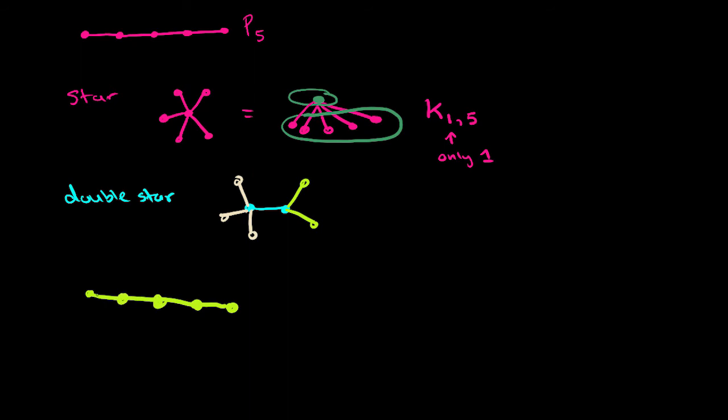And then we have a bunch of other vertices like this. Some like that, some like that. A bunch of things.